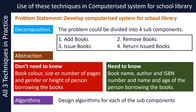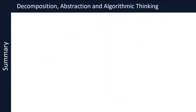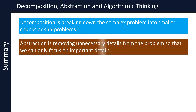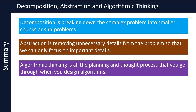I hope you now understand how to apply decomposition, abstraction and algorithmic thinking in solving problems with the help of computers. Let's recap. Decomposition is breaking down the complex problem into smaller chunks or sub-problems. Abstraction is removing unnecessary details from the problem so that we can only focus on important details. Algorithmic thinking is all the planning and thought process that you go through when you design algorithms. I hope you now have a good idea of these three concepts.